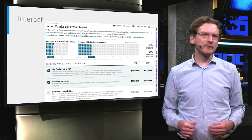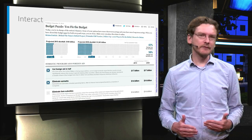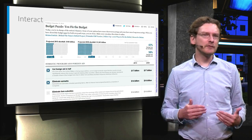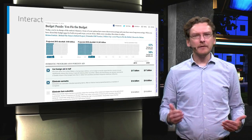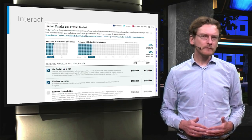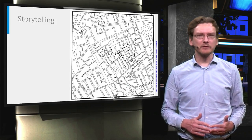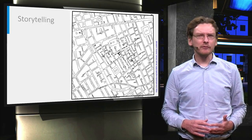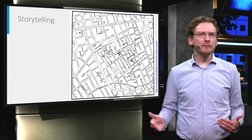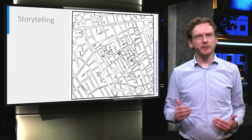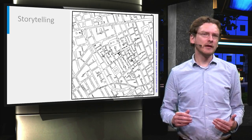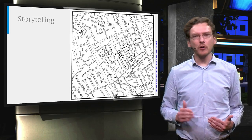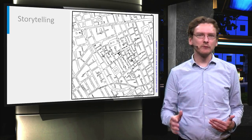All of these steps are part of the storytelling process, which is to a large extent what data visualization and analysis is a part of. There are several very famous examples of this. One relates to a cholera epidemic in London around the 1850s. At that time, people thought that cholera was caused by bad air. A physician named John Snow decided to actually plot the homes of the cholera victims and the locations of the water pumps, and in doing so, he was able to locate the water pump that the disease was spreading from.